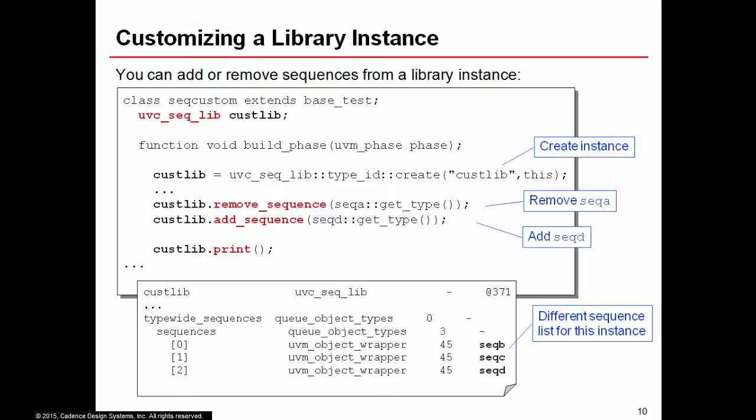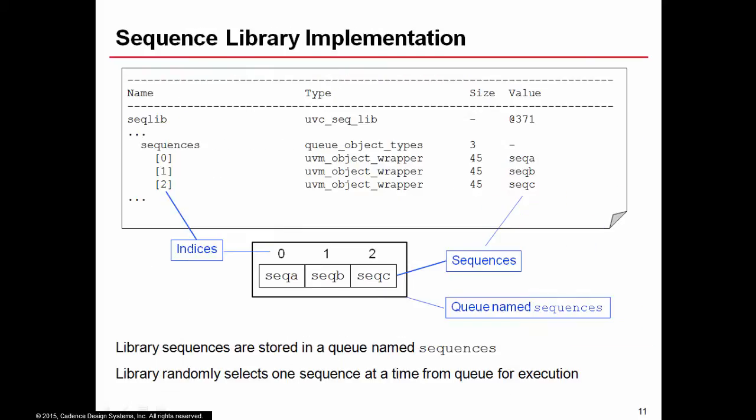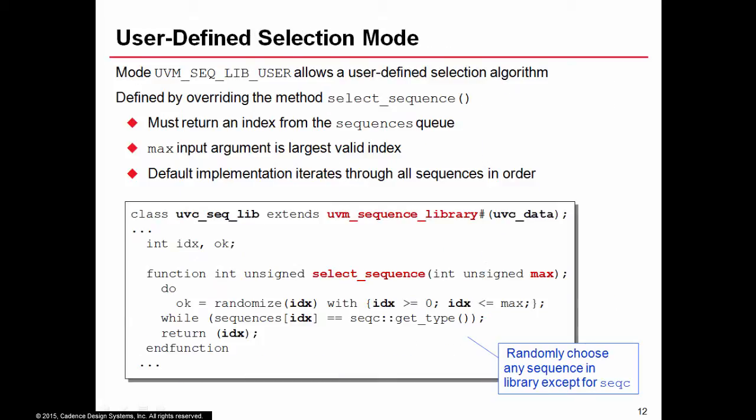Looking at the implementation: the sequences array shown in the print is actually a queue of sequence references. The indices iterate from zero upward — index 0 for SeqA, index 1 for SeqB, index 2 for SeqC. All the library does is pick one index from that queue and execute the sequence found at that index. Knowing this, we can understand how to implement a user-defined selection mode.